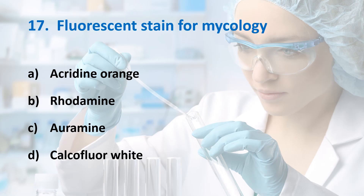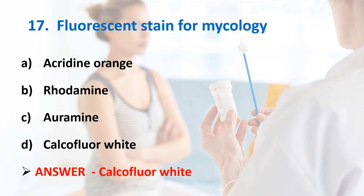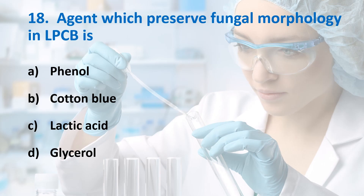Seventeenth question: Fluorescent stain for mycology? Options: Acridine orange, Rhodamine, Auramine, Calcofluor white stain. Answer is Option D, Calcofluor white stain. Calcofluor white stain is used for the rapid detection of yeast, fungi, and parasitic organisms. It is a non-specific fluorochrome that binds to cellulose and chitin in cell walls.